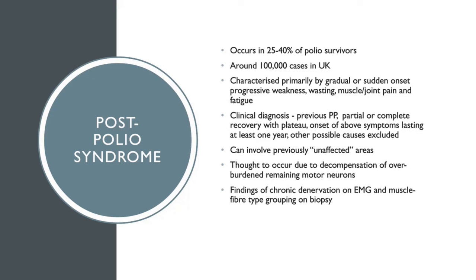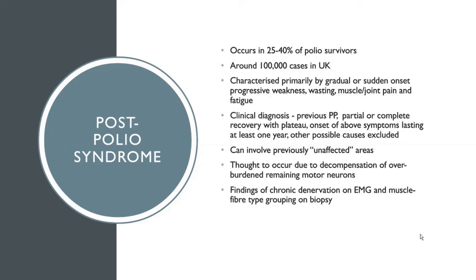Although the pathophysiology is not known exactly, it's thought to occur due to decompensation of the overburdened remaining motor neurons following the previous paralytic polio. In terms of investigation findings, they're nonspecific, but you can find evidence of chronic denervation on EMG and muscle fibre-type grouping on muscle biopsy.